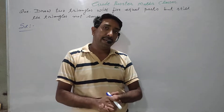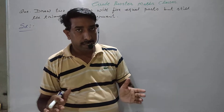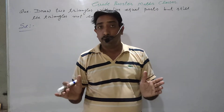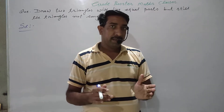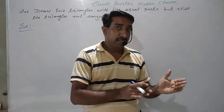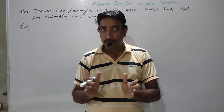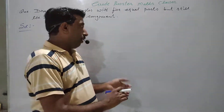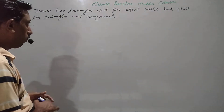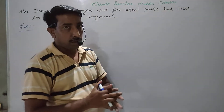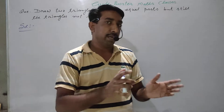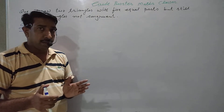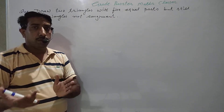One thing to make clear: if all three sides of a triangle are equal to the three sides of another triangle, those triangles will surely be congruent. So we will take all three angles equal and only two sides equal. If three sides are equal, the triangle will be congruent and the question won't be solved. Similar triangles means equal angles and sides of one triangle are proportional to the sides of another triangle.